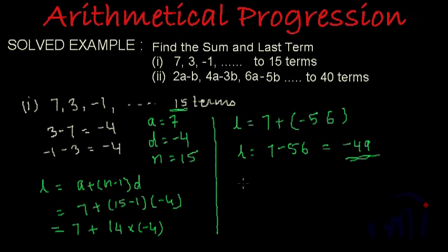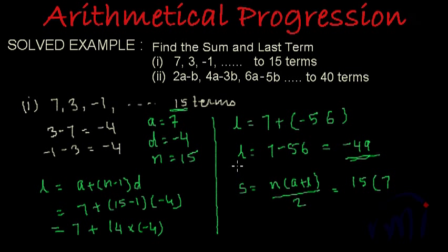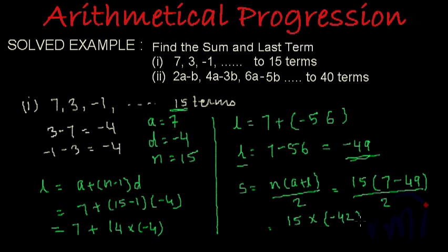The formula to find the sum is: S equals n multiplied by (a plus l) divided by 2. Here n is 15, a is 7, and l as we found is minus 49. So this becomes 15 multiplied by (7 minus 49) divided by 2, which is 15 multiplied by minus 42 divided by 2, giving us 15 multiplied by minus 21.